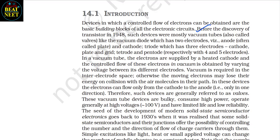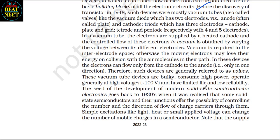Before the discovery of the transistor in 1948, such devices were mostly vacuum tubes, also called valves, like the vacuum diode which has two electrodes: anode (often called plate) and cathode; triode which has three electrodes: cathode, plate and grid; and tetrode and pentode with four and five electrodes respectively.